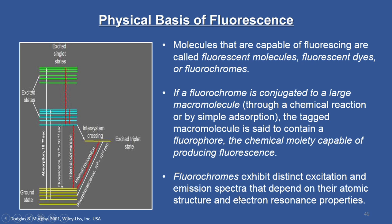Fluorochromes exhibit distinct excitation and emission spectra that depend on their atomic structure and electron resonance properties. Looking at the Jablonski diagram, once photons are absorbed, the electrons move to excited states — characteristic excited singlet states, excited triplet states, and so on. Various phenomena occur including absorption, fluorescence, internal conversion, intersystem crossing, and phosphorescence. We will see what fluorescence microscopy does with these transitions.